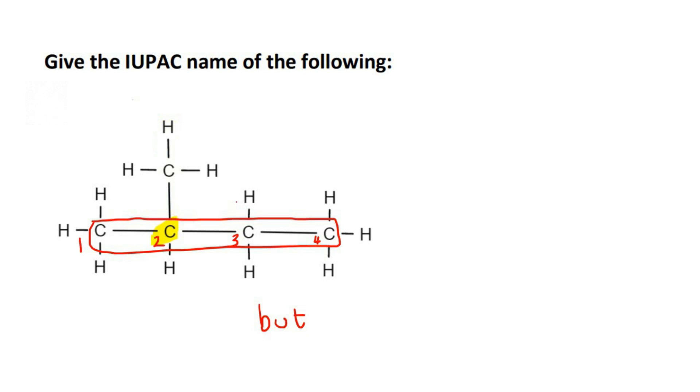If you had to name it from the right-hand side, this would not be correct. Because then that would be carbon 1, that would be carbon 2, that would be carbon 3, and that would be carbon 4. So your branch would be on carbon number 3.